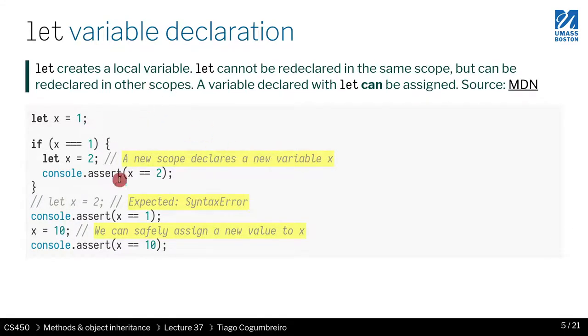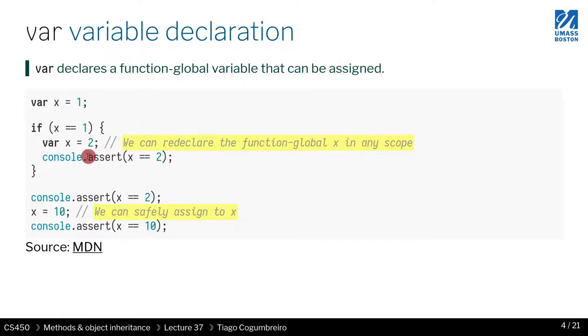The other way you have to define a variable is called let. And let, what it lets you do is you declare a variable, but if you try to do the same thing we did with var, it won't work. That's the first thing. So the first thing is that the variable x is now scoped.